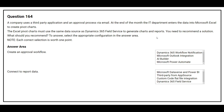Question 164: A company uses a third-party application and an approval process via email. At the end of the month, the IT department enters data into Microsoft Excel to create pivot charts. The Excel pivot charts must use the same data source as Dynamics 365 Field Service to generate charts and reports. For creating an approval workflow, the correct answer is Microsoft Power Automate. For connecting to report data, the correct answer is Microsoft Dataverse and Power BI.